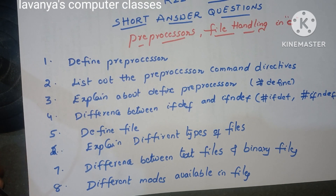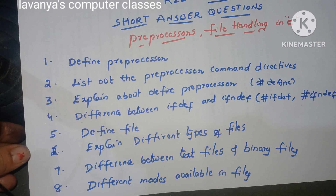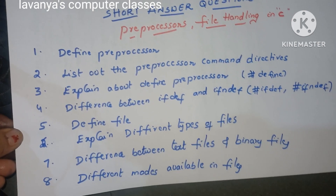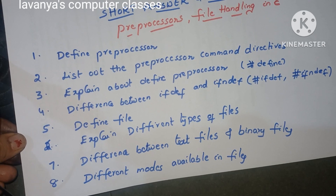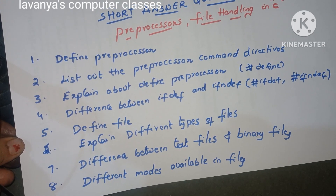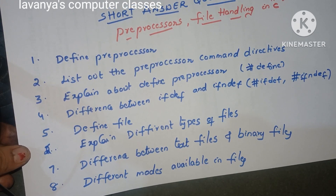Next one is define file — what is a file? Next, explain different types of files. Different types of files means text files and binary files. The same question is also asked like this: difference between text files and binary files.